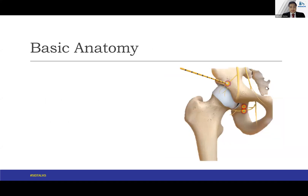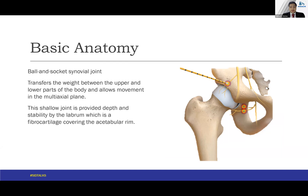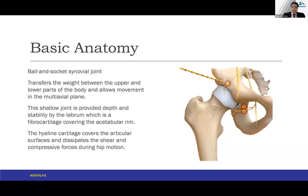For the basic anatomy, the hip is a ball and socket synovial joint. It transfers weight between the upper and lower parts of the body and allows movement in multiple action planes. This shallow joint is provided depth and stability by the labrum, which is a fibrocartilage covering the acetabular rim. The hyaline cartilage covers the articular surfaces and dissipates shear and compressive forces during hip motion.